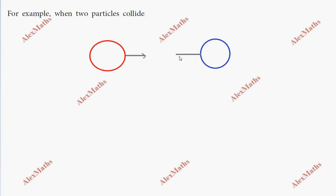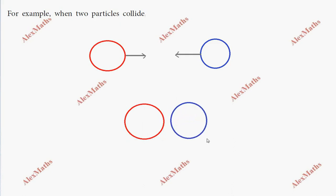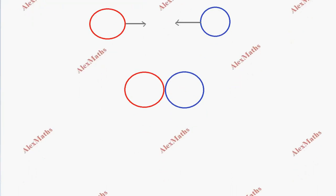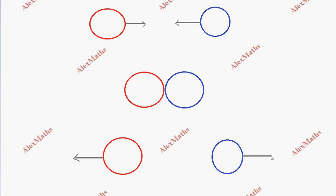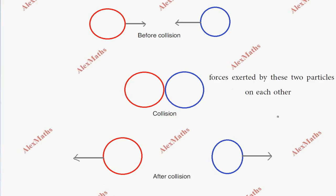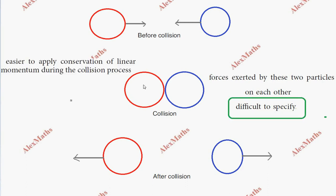Before collision, the two particles are approaching each other and come into contact — they collide. After collision, they move away from each other in opposite directions. In this collision process, the force each particle exerts on the other is difficult to specify, so it is easier to apply the law of conservation of linear momentum during the collision process.